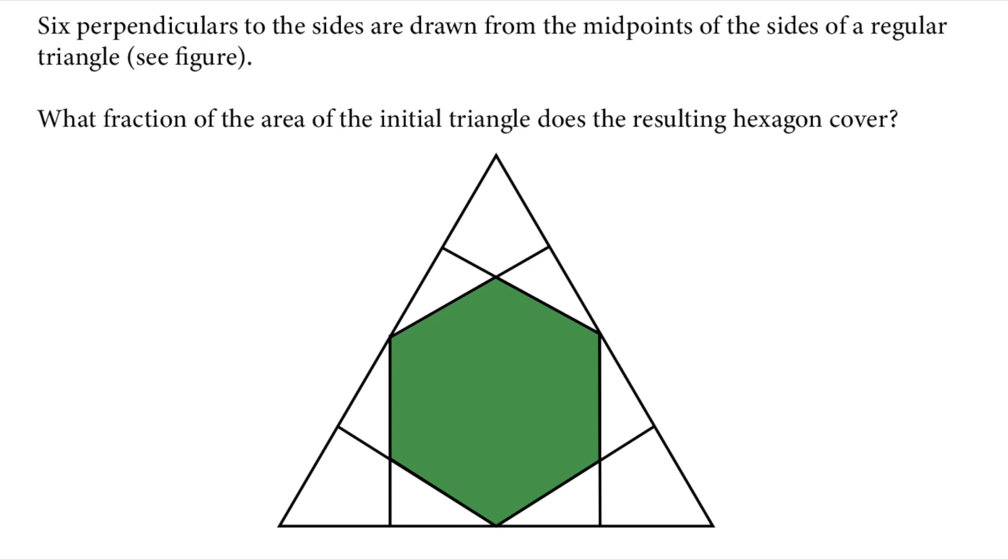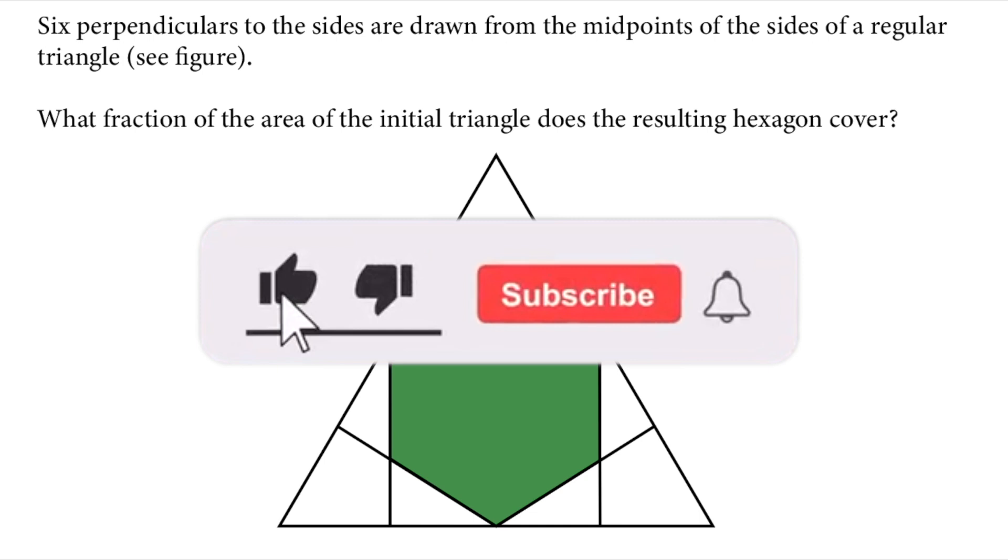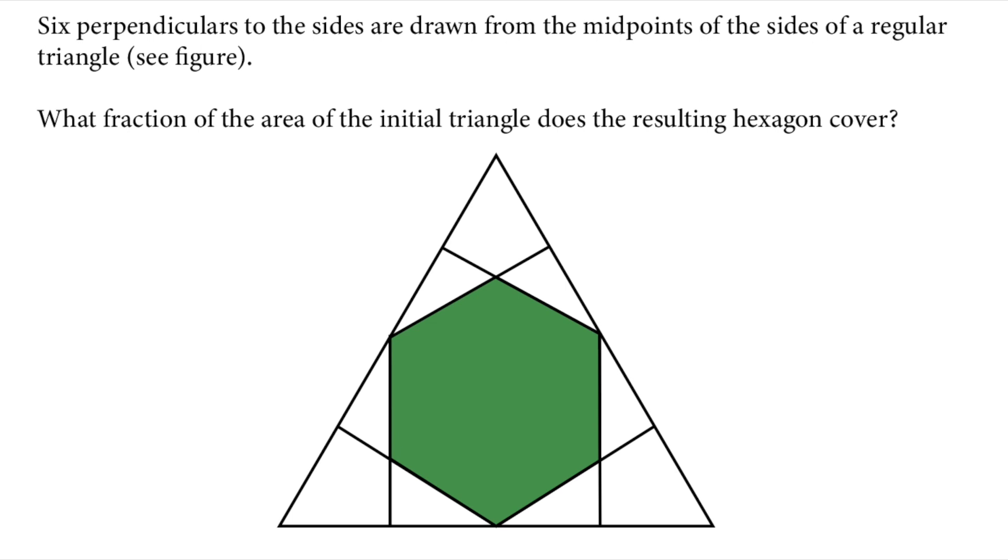In this video, we will solve this math olympiad question. Six perpendiculars to the sides are drawn from the midpoints of the sides of a regular triangle. What fraction of the area of initial triangle does the resulting hexagon cover?